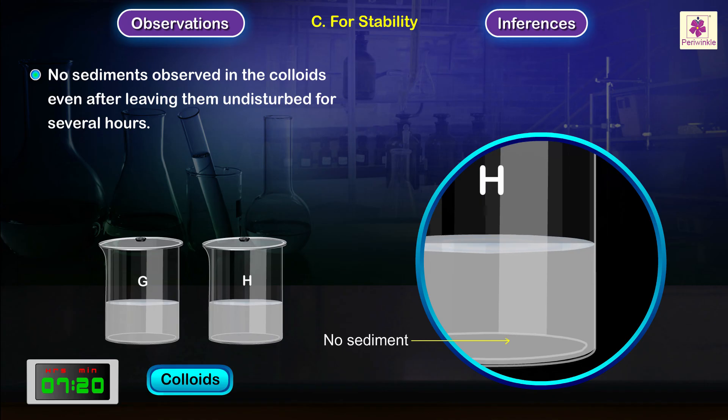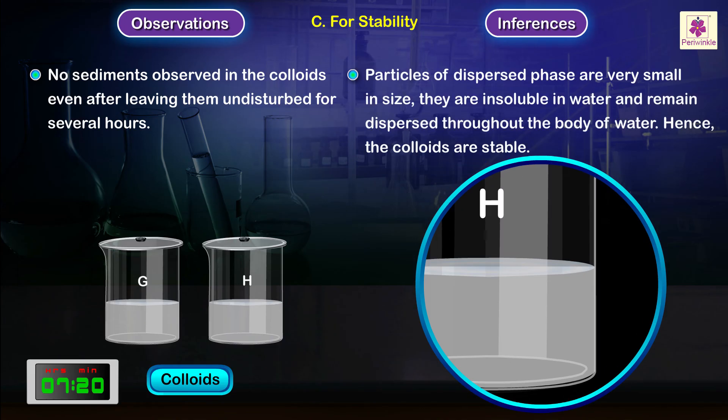Particles of dispersed phase are very small in size. They are insoluble in water and remain dispersed throughout the body of water. Hence, the colloids are stable.